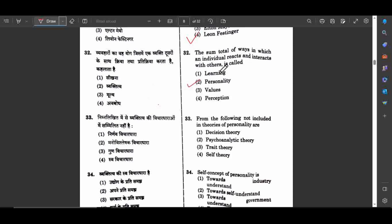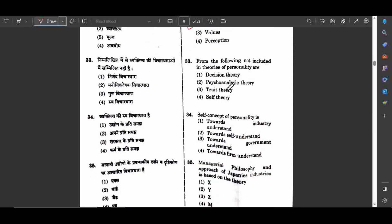Question number 33: From the following, not included in theories of personality. Psychoanalytical theory of personality was given by Sigmund Freud. Trait theory by Gordon Allport, and self theory by Carl Rogers.